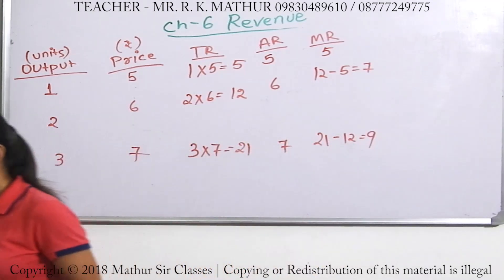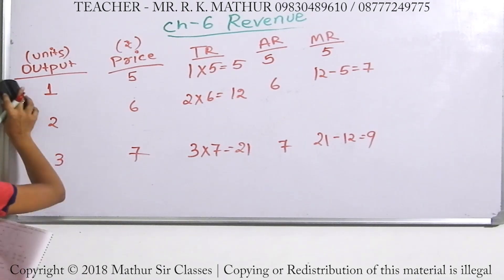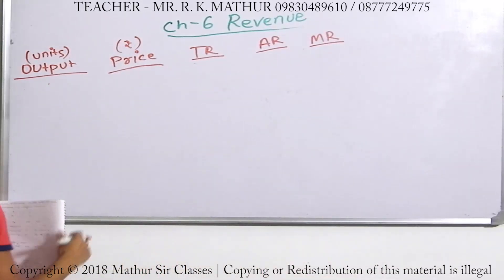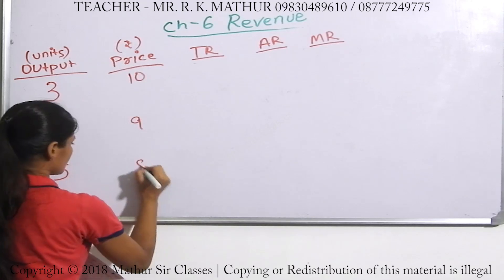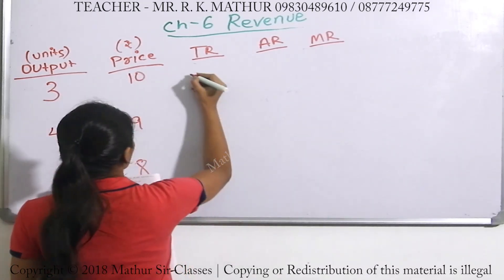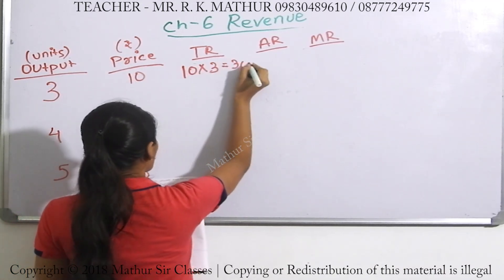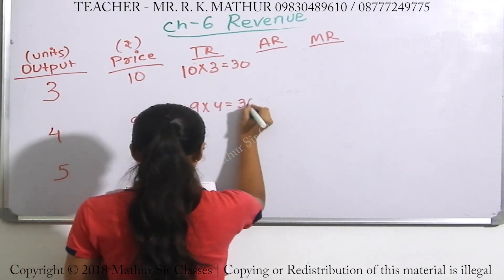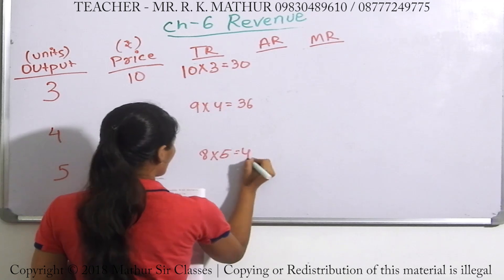Now you can understand everything. Take some sort of next example. Total revenue is 10 into 3 is 30, 9 into 4 is 36, and 8 into 5 is 40.